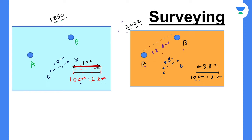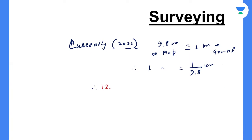Currently, 9.8 cm on map is representing 1 kilometer on ground. Therefore, 1 centimeter on map is representing 1 divided by 9.8 kilometers on the ground. Now if we talk about the distance between A and B, you got 12.6 centimeter.